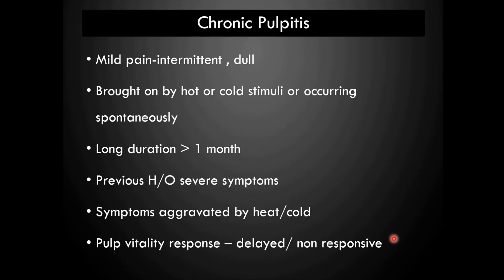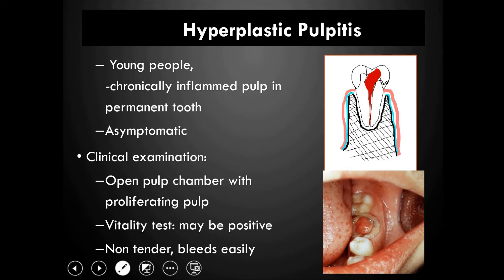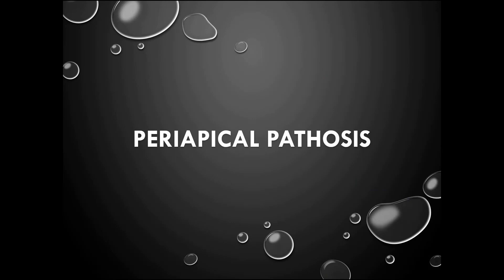Another form of chronic pulpitis is hyperplastic pulpitis, usually seen in young people with a chronically inflamed pulp in a permanent tooth. It is usually asymptomatic. On clinical examination, you can see an open pulp chamber with a proliferating pulp. Vitality test may be positive or negative, and it is non-tender but bleeds easily as it contains granulation tissue. This concludes the types of pulpal lesions. Periapical diseases will be discussed in the second part of this video.